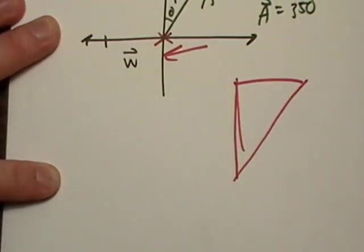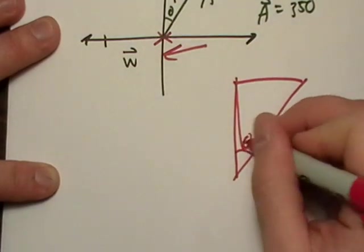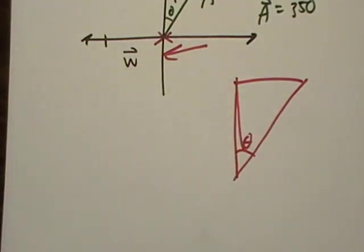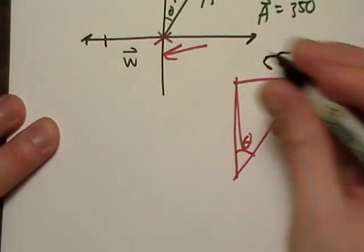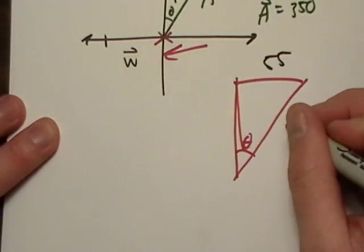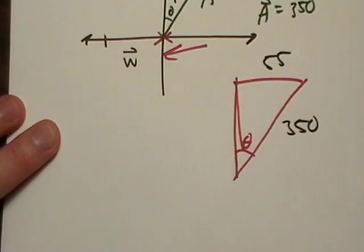Let me just redraw this. Here's what we want - we want theta. And this is 55, and A is 350.